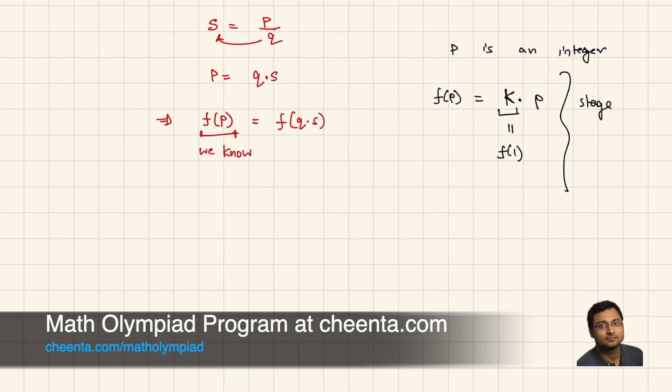This was in stage 1. We found it earlier in the previous video that f(P) equals to some constant number times P. So, we write that. This is some constant number times P.